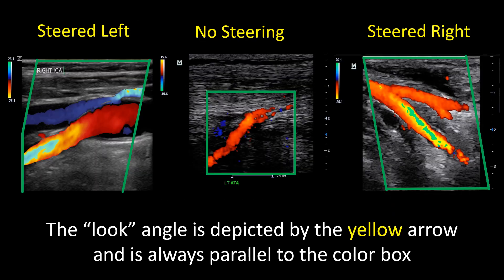Sometimes none, such as in curvilinear arrays, which cannot beam steer. Here are a couple of examples. The look angle is depicted by the yellow arrow and is always going to be parallel to the color box. The left-hand image is steered left, no steering in the center — the look angle is straight down — and the image on the right, we are steered right. Note how the yellow arrow always remains parallel to the color box.